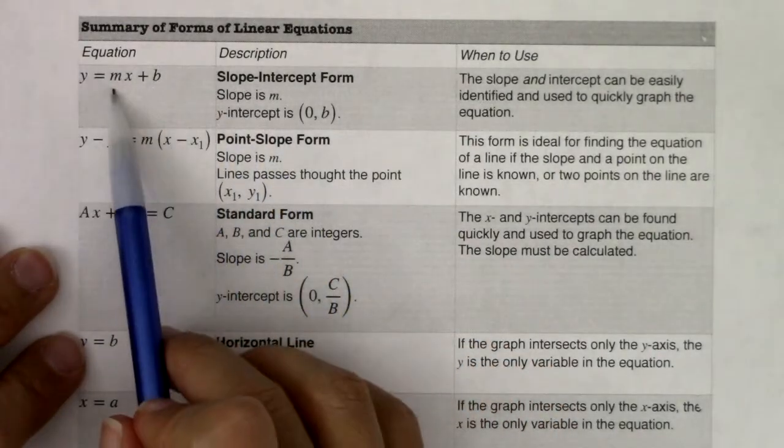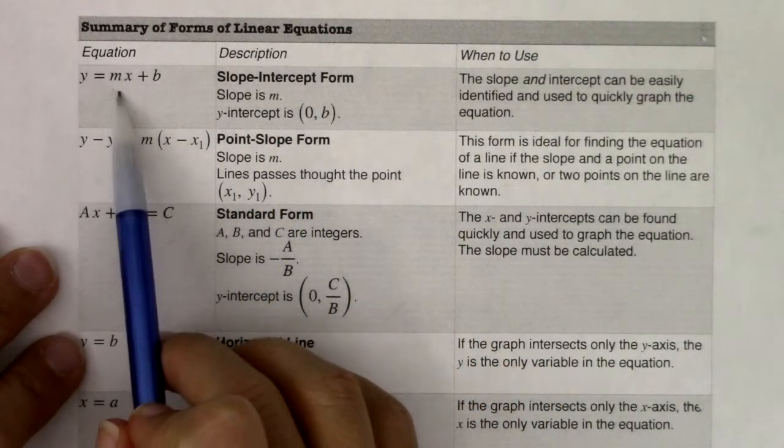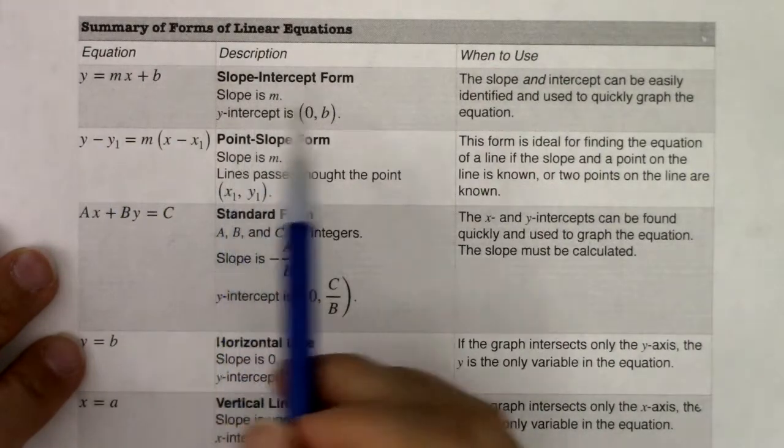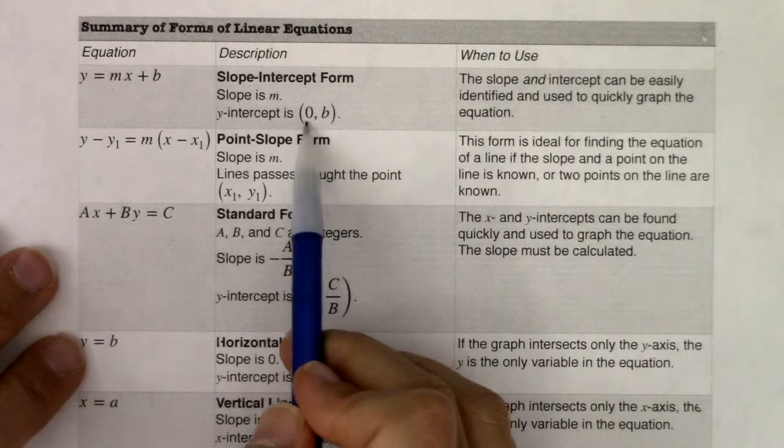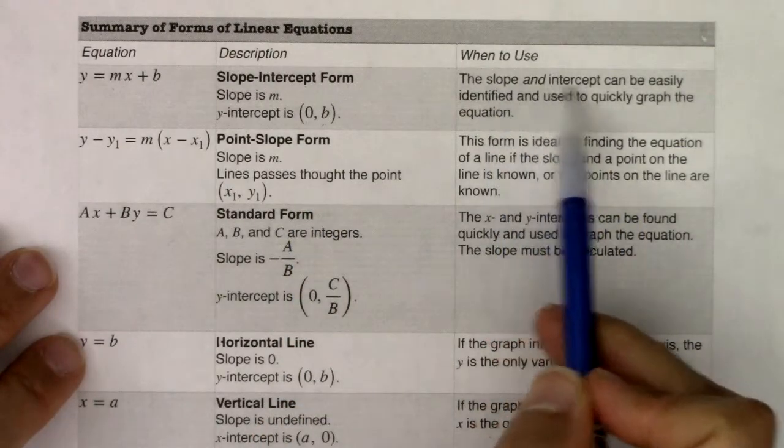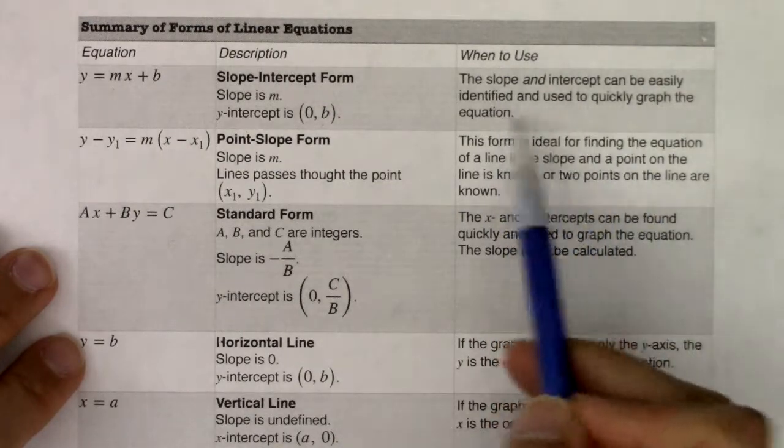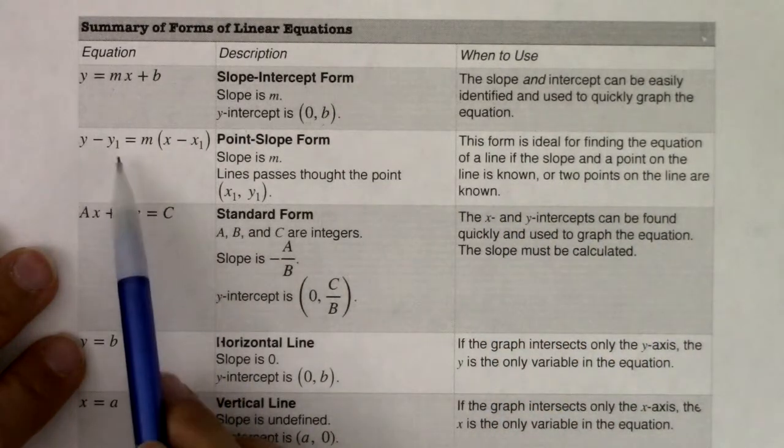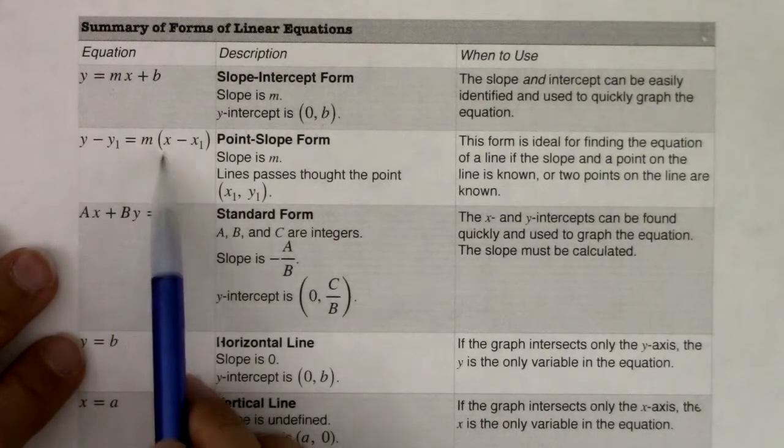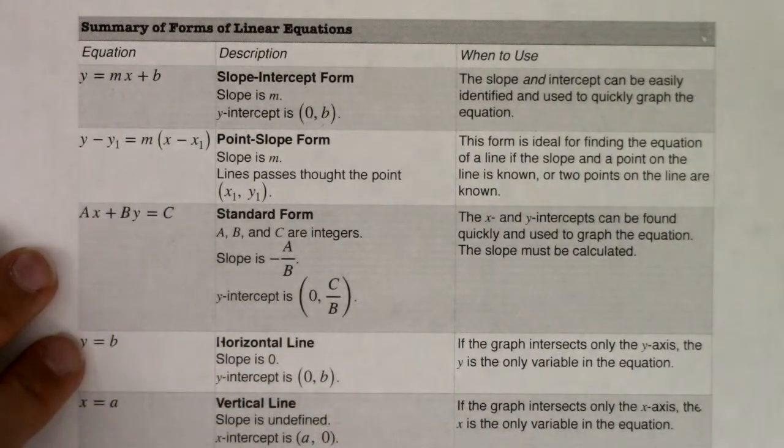So we have y equals mx plus b, by far the most popular version of the line, slope-intercept form. Slope is m, the y-intercept, take note, it has an x-coordinate and a y-coordinate. So you would use this when the slope and the intercept can be easily identified and used quickly to graph the equation. Then we have the point-slope form, also pretty popular. This is more popular in calculus. I think this tends to be more popular in algebra and stats.